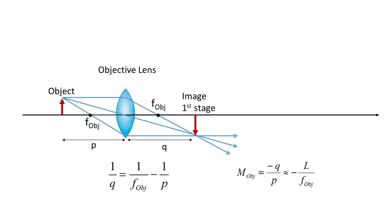The image formed by the objective lens is located where these three rays converge, producing a real inverted image for the first stage of the microscope. The image distance may be calculated from the thin lens formula: 1 over Q equals 1 over F minus 1 over P. The magnification of this first stage is the negative ratio of the image distance divided by the object distance.